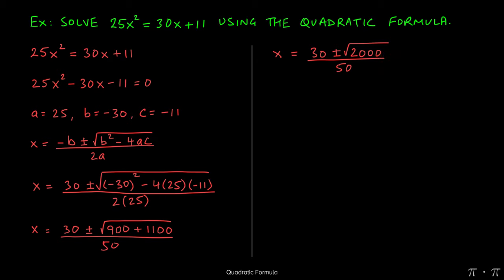At this stage, we need to simplify the radical before we can move ahead. We notice that 2000 can be rewritten as the perfect square of 400 times 5. 400 times 5 is 2000, and we know the square root of 400 is just 20.